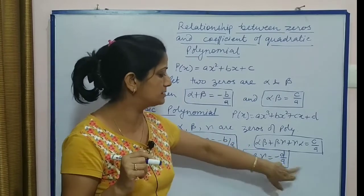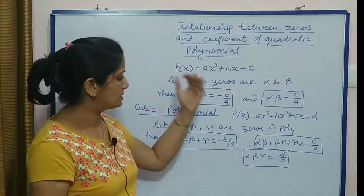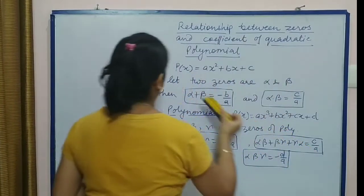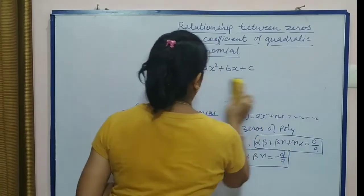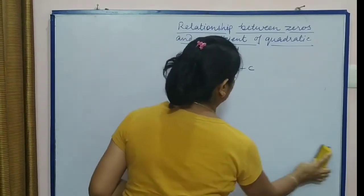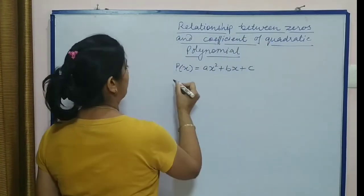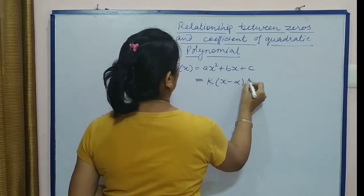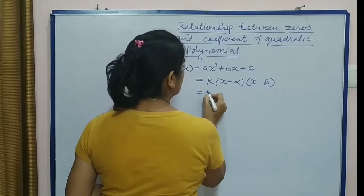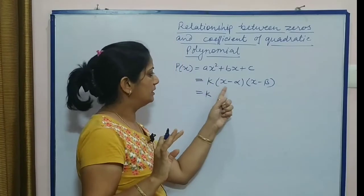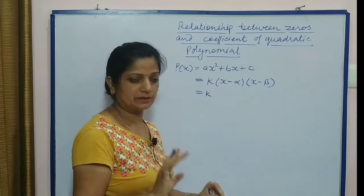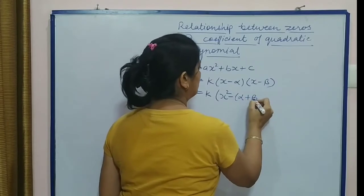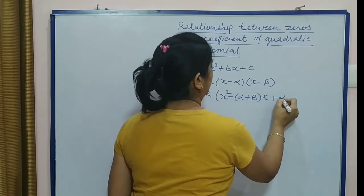Ab isko waise toh proof aap ke liye board ke liye nahi hai, lekin proof isko hum karte kaise hain? When two zeros are α and β, then equation is k (any constant) × (x - α)(x - β). When we multiply these two, we will get x² - (α + β)x + αβ.